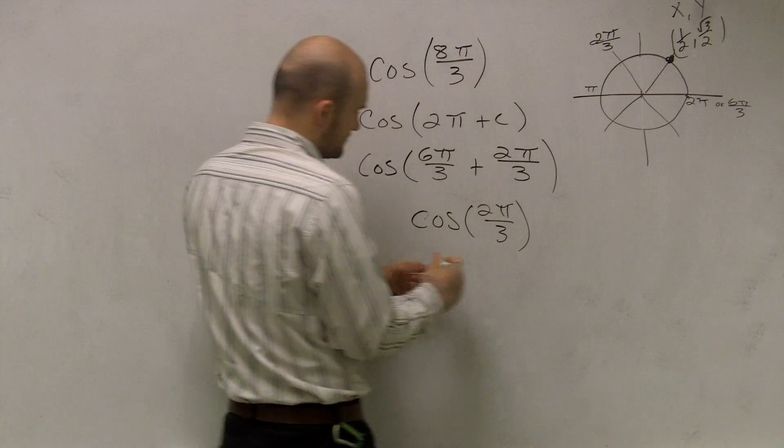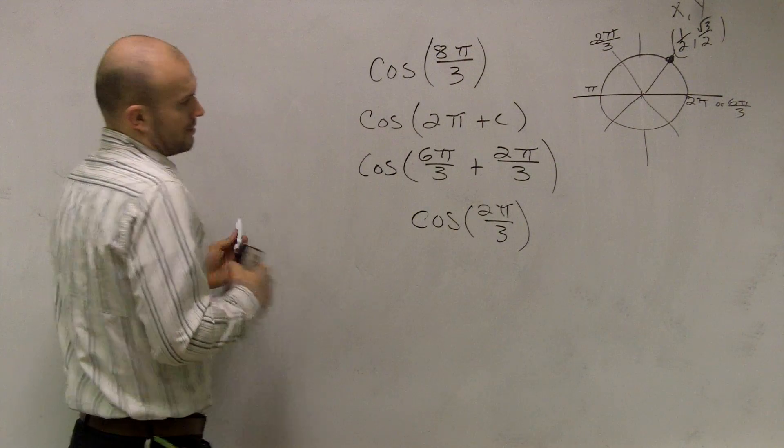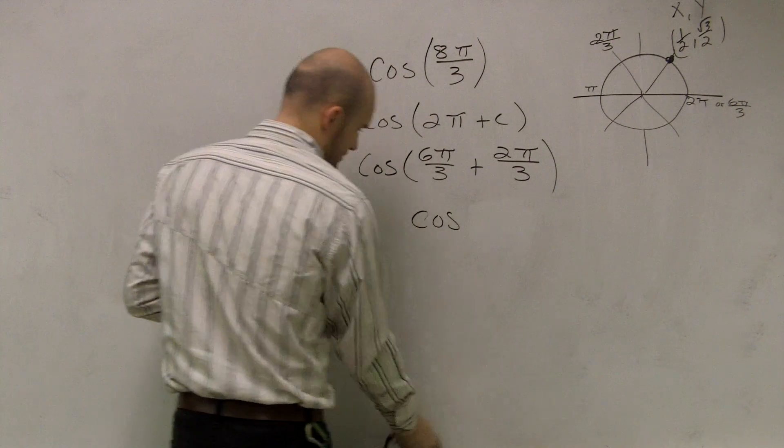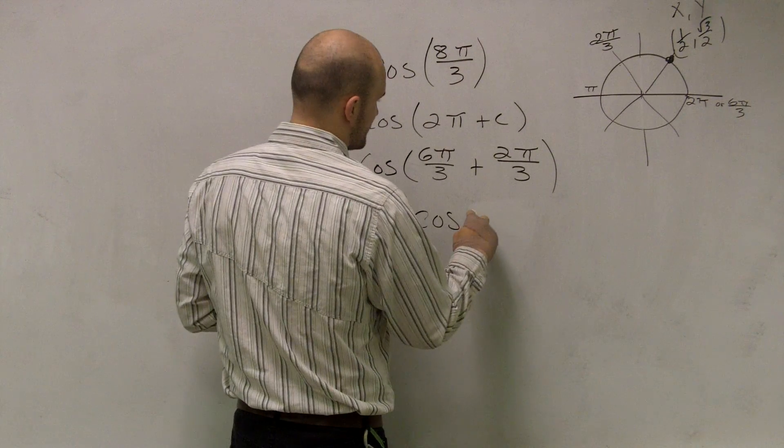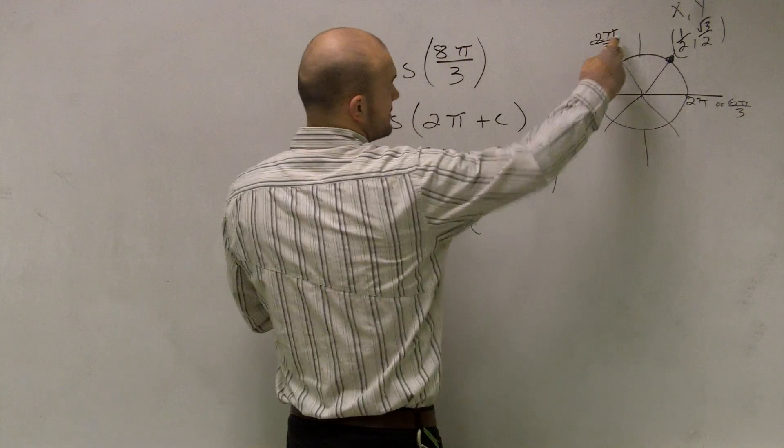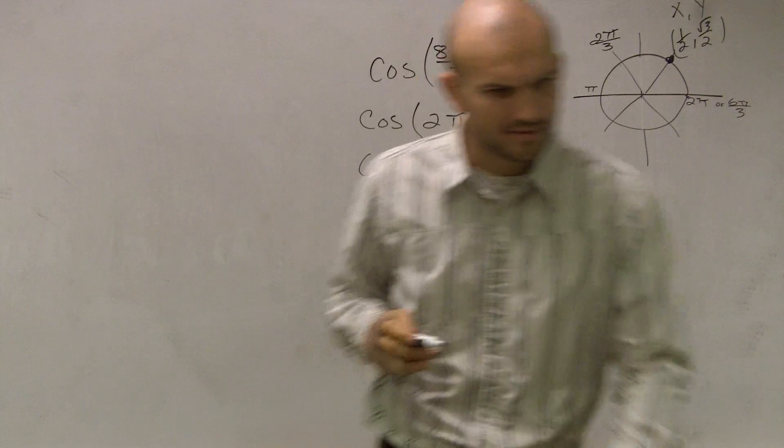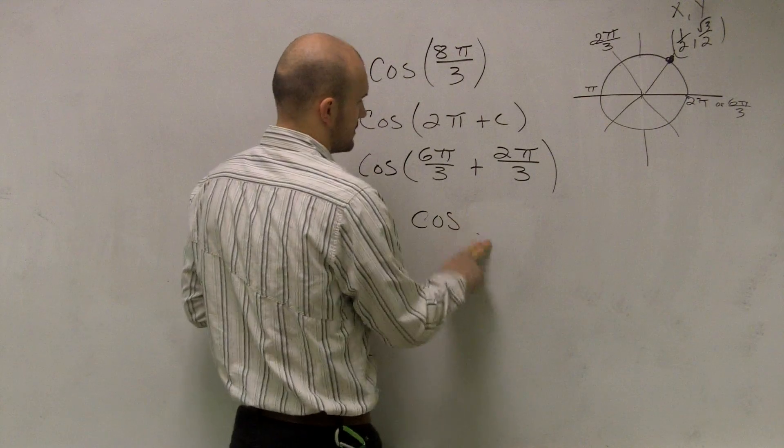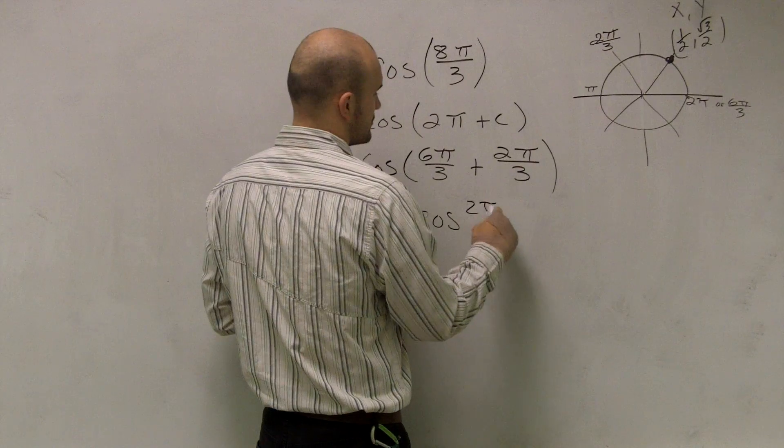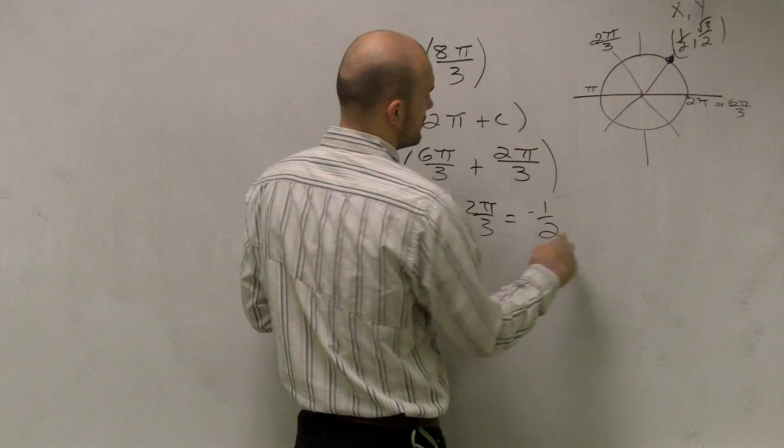So the cosine for my 2π over 3 is going to equal a negative 1/2. Does that make sense? Because this point is negative 1/2, square root of 3 over 2.